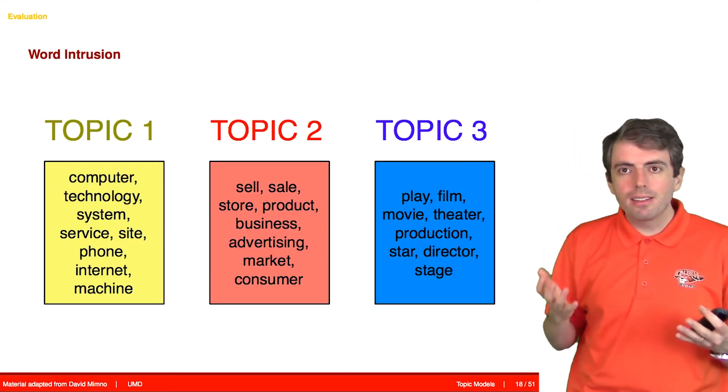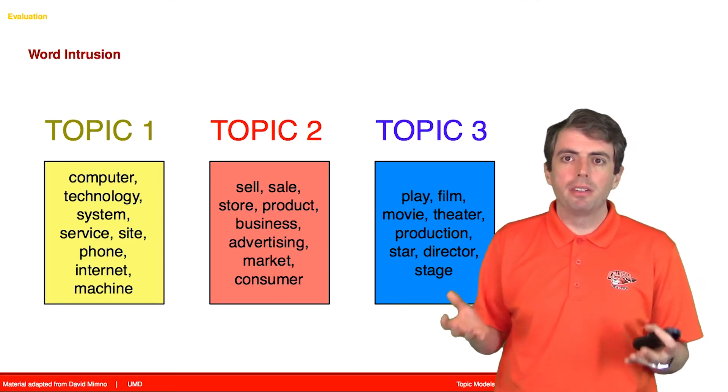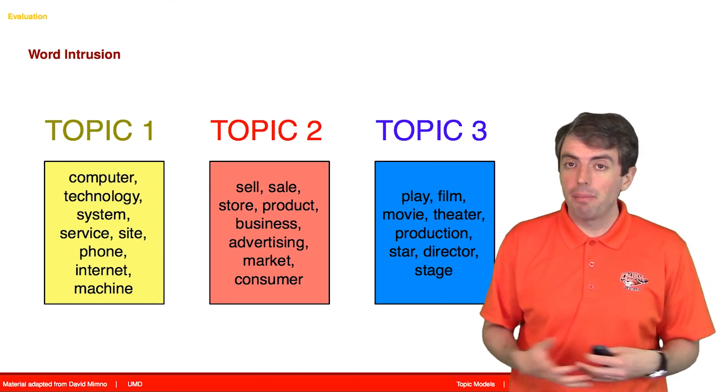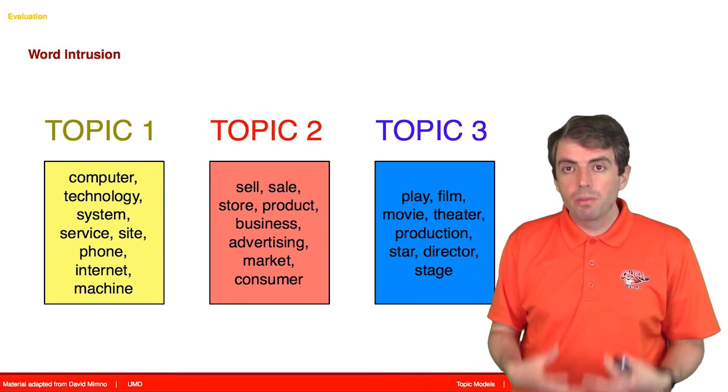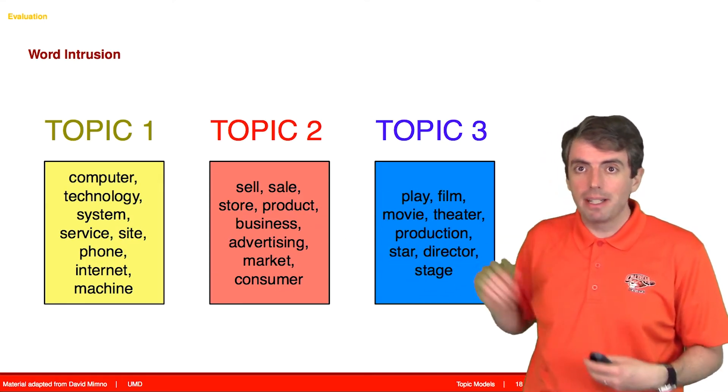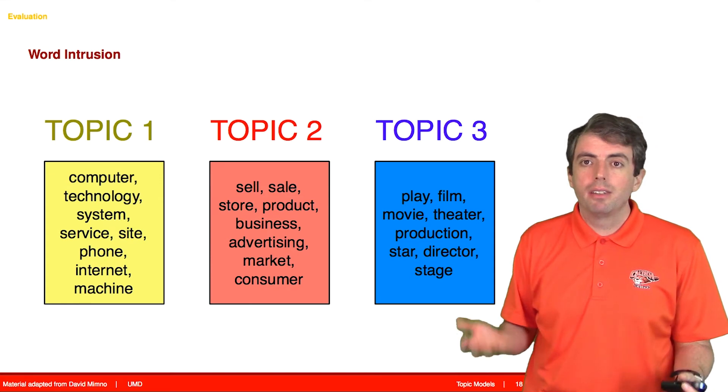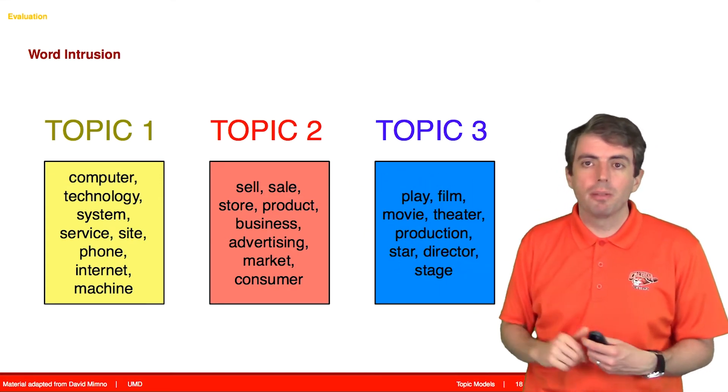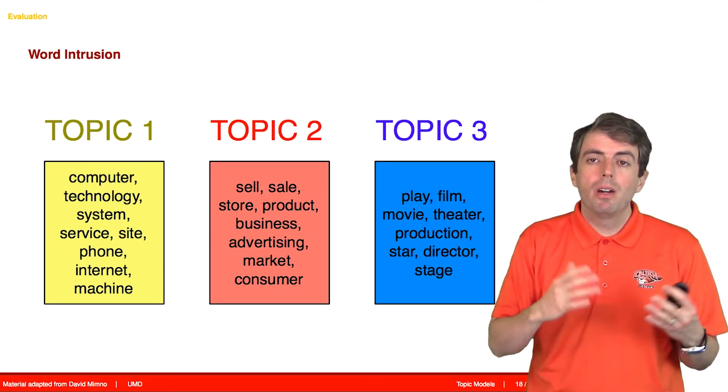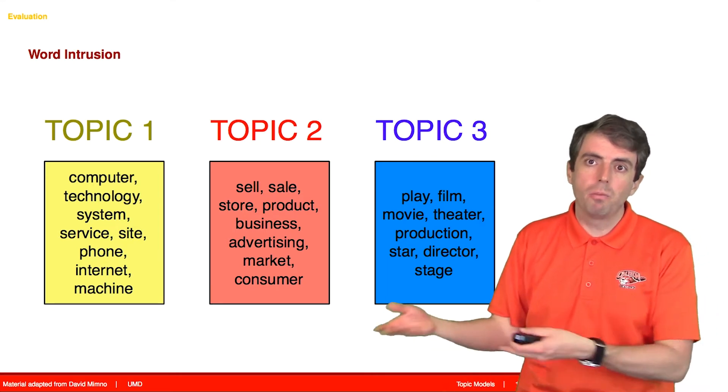So let's remember what a topic model does, and why people use topic models. When you run a topic model, you get topics out of it, and these topics allow you to tell a story. So for example, here are three topics from a decade's worth of the New York Times, one about technology, one about business, and one about the arts.